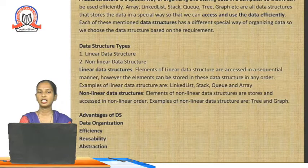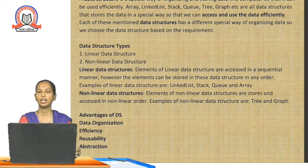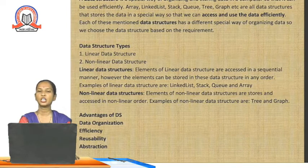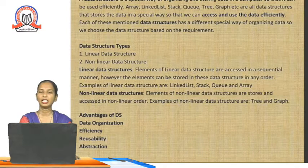There are two types of data structure. The first is the linear data structure and the second is the non-linear data structure. The elements of the linear data structure are accessed in a sequential manner, but the elements can be stored in these data structures in any order. Examples of linear data structure are linked list, stack, queue, and array.